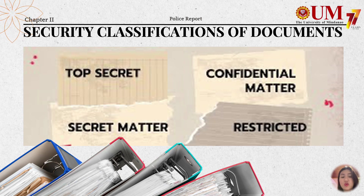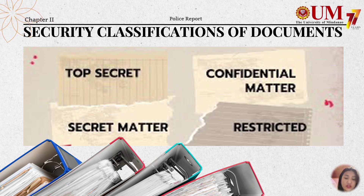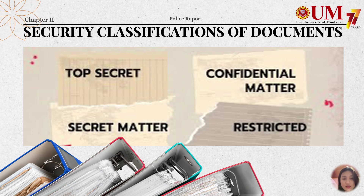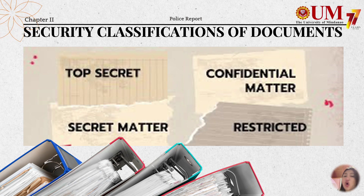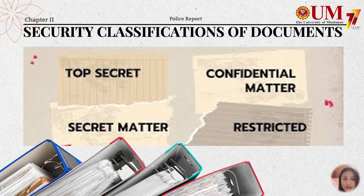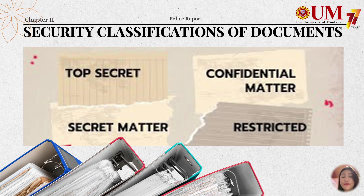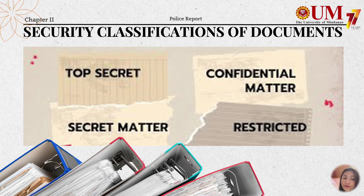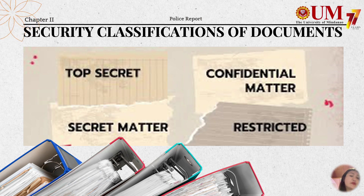It's also important to know the security classifications of documents. Top Secret documents would cause exceptionally grave damage to the nation. Secret Matter documents would endanger national security or cause serious injury to the interests of the nation. Confidential Matter will not endanger national security but would be prejudicial to the interest of the nation. Restricted Matter will not cause grave damage but requires special attention.